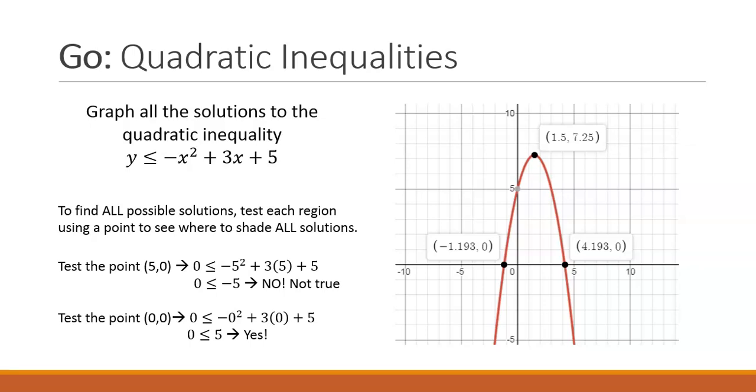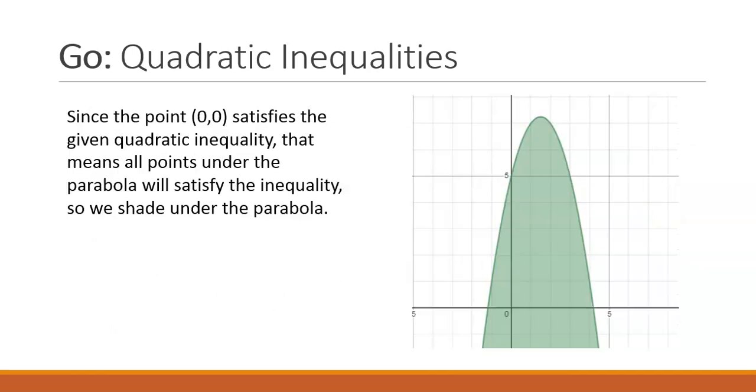I will test the point 0,0. When I plug in 0,0 into my quadratic inequality 0 is less than or equal to 5 so yes that is true. This tells me that I need to shade below my quadratic inequality. Since the point 0,0 satisfies the given quadratic inequality that means all points under the parabola will satisfy the inequality so we shade under the parabola.